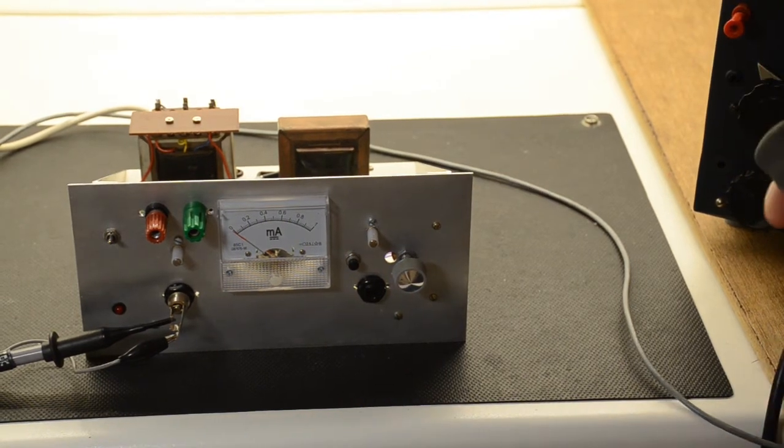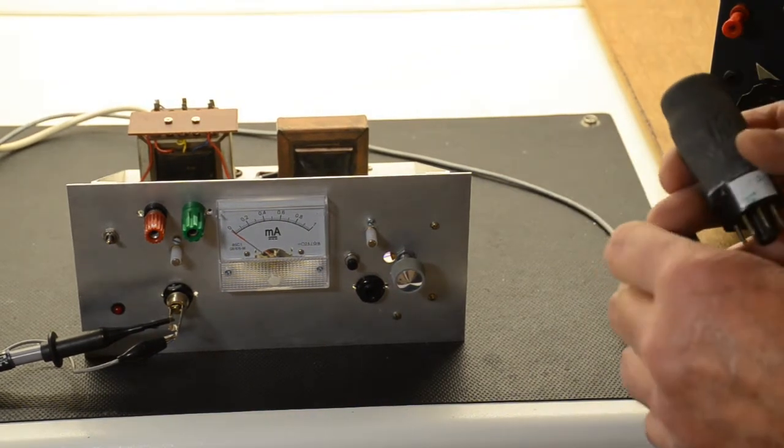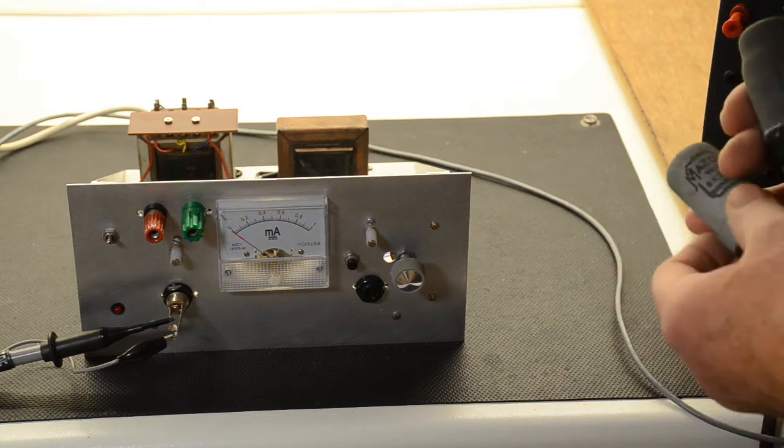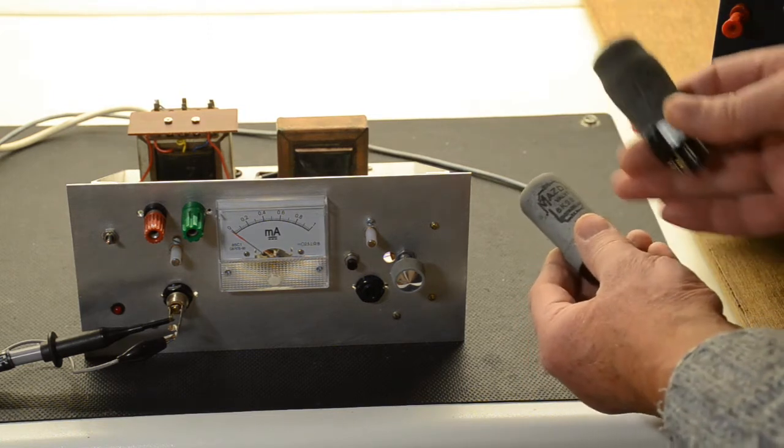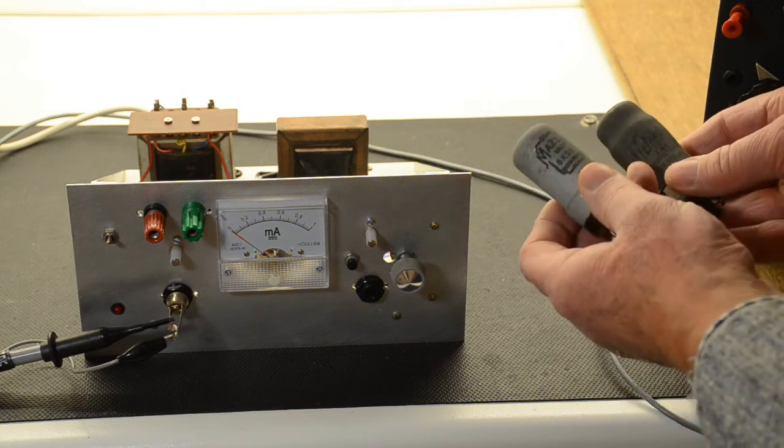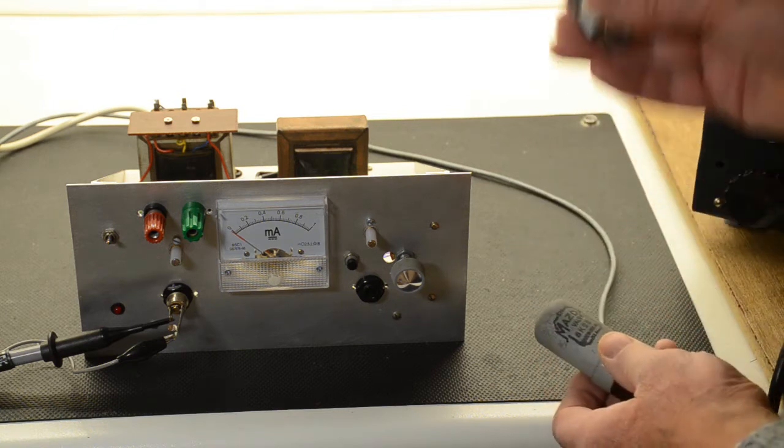To conclude this project, what I thought would be a good idea would be to show another Thyratron. Here we have a second one. This is a 6K25, which is very, very similar to the T41 we've just seen working.